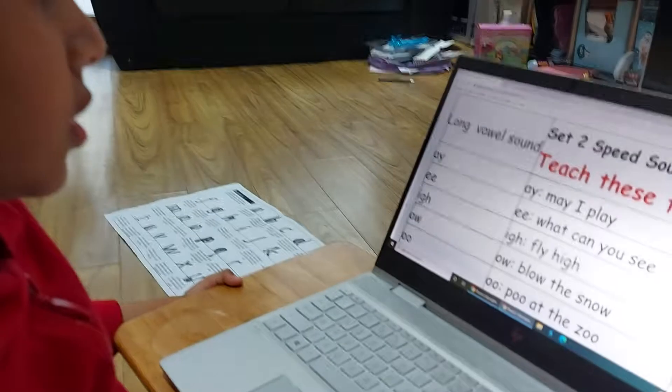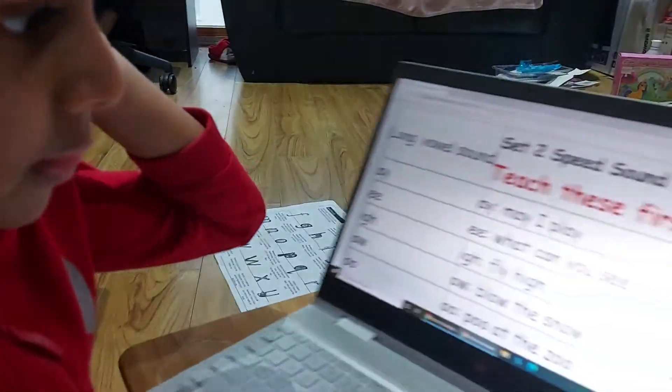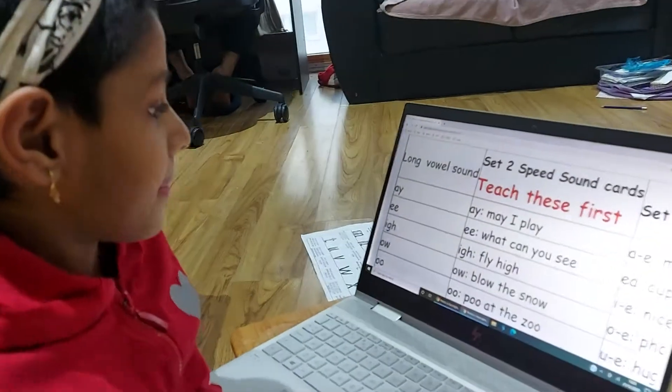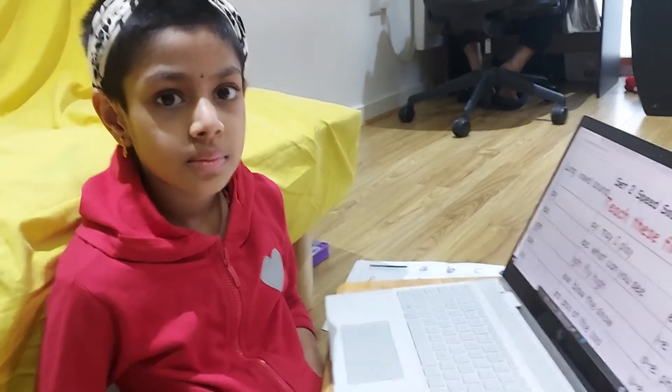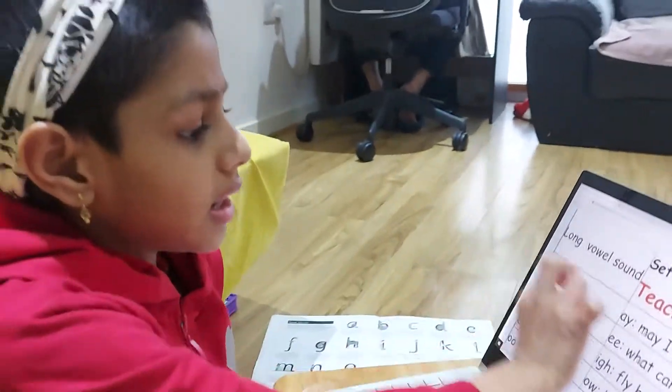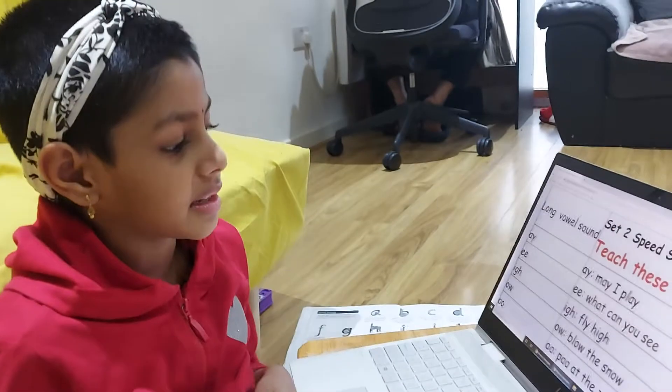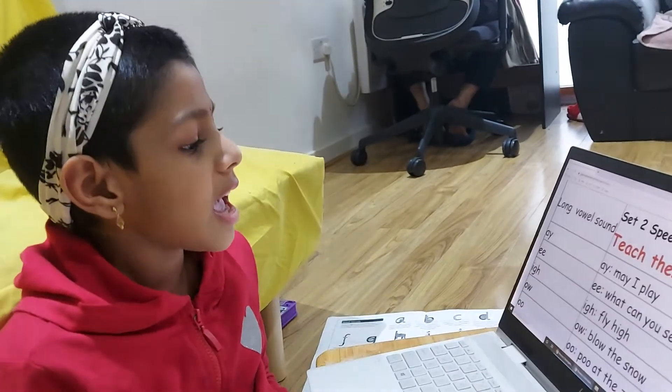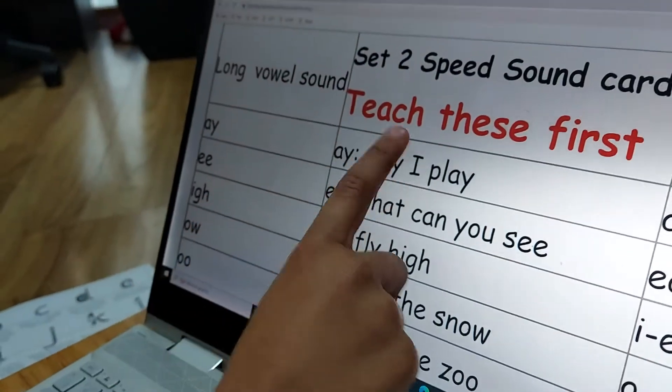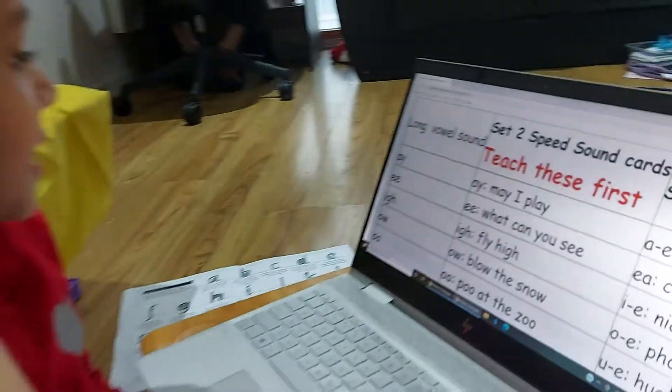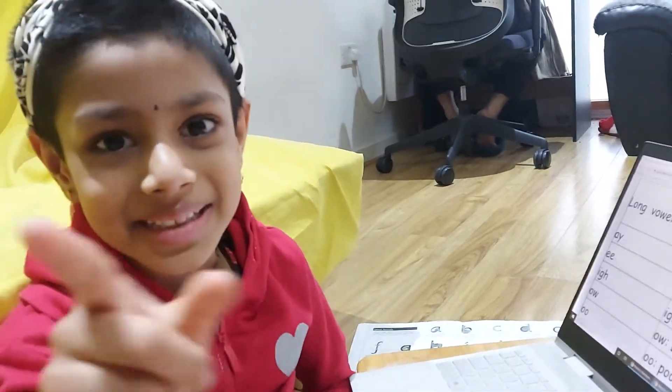Long sounds. A. May I play? May I play? A. So let's say it like three times or four times. Let's say A and say the sentence. A. A. A. May I play? May I play? A. E. E. What can you see? I can see a phone right here.